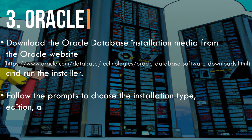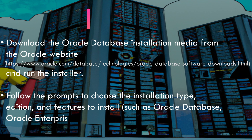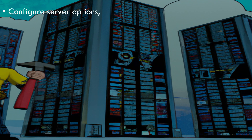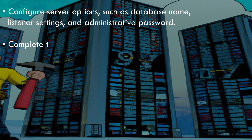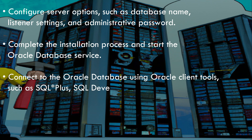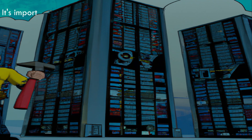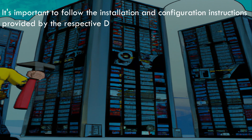Follow the prompts to choose the installation type, edition, and features to install — such as Oracle Database and Oracle Enterprise Manager — then configure server options such as database name, listener settings, and administrative password. Complete the installation, start the Oracle Database service, and connect using Oracle client tools such as SQL*Plus, SQL Developer, or other Oracle client applications.